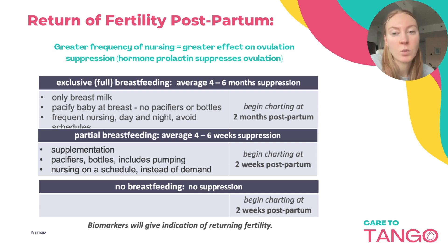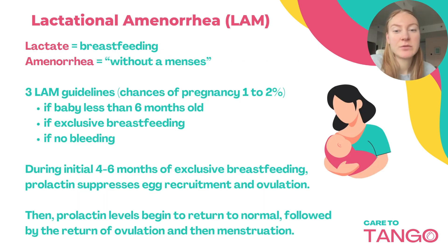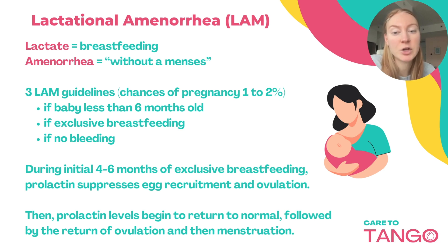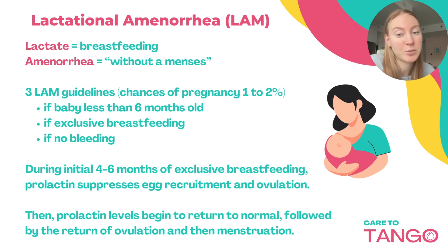This is really going to differ in terms of when your fertility returns — some people can go way past about a year and others get it back within four weeks. This is referred to as lactational amenorrhea: 'lactate' meaning breastfeeding and 'amenorrhea' meaning without menses. With these three LAM guidelines, the chances of pregnancy are about one to two percent. Those guidelines are: your baby is less than six months old, you are exclusively breastfeeding, and you have no bleeding. During that initial four to six months of exclusive breastfeeding, prolactin suppresses egg recruitment and ovulation, so you can't get pregnant.